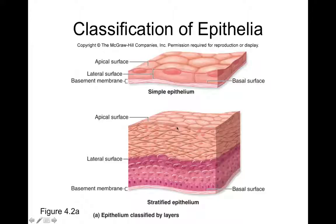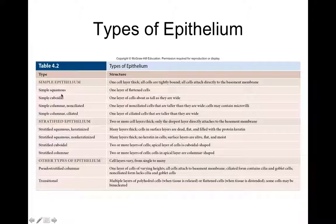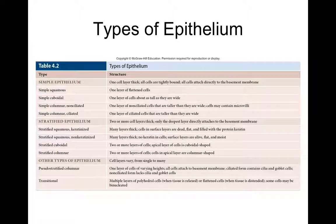The cell shapes are: flattened is squamous, cube-shaped is cuboidal, and column-shaped is columnar. All combinations exist in the body — simple squamous, simple cuboidal, simple columnar, stratified squamous, stratified cuboidal, stratified columnar. The number of cell layers and shape of cells gives each epithelial tissue a specific function. A thin simple epithelium would not be protective, so you would not expect skin to be a simple epithelium. A protective epithelium would be stratified.